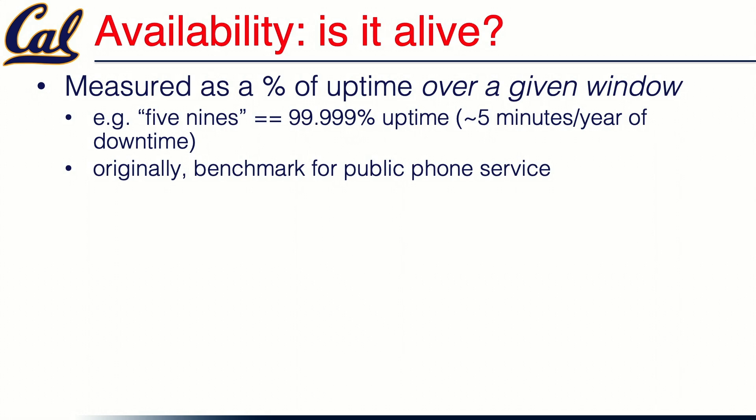How does the public phone company define downtime? In the days of landline phones, if you pick up the phone and there's a dial tone and you can make a call, the system is up. If any part of that process fails, the system is down. Amazingly, the public landline phone system was generally able to achieve this extremely high bar of availability. Something like three nines is ambitious even for well-managed web services.